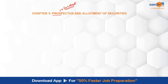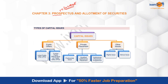Prospectus and allotment of securities — those are the important provisions I will be discussing. There are various types of capital issues that can take place. Capital issue is that particular process through which the company raises funds by issuing its securities to the investors. The types of capital issue are: by way of public offer, private placement, and other issues.